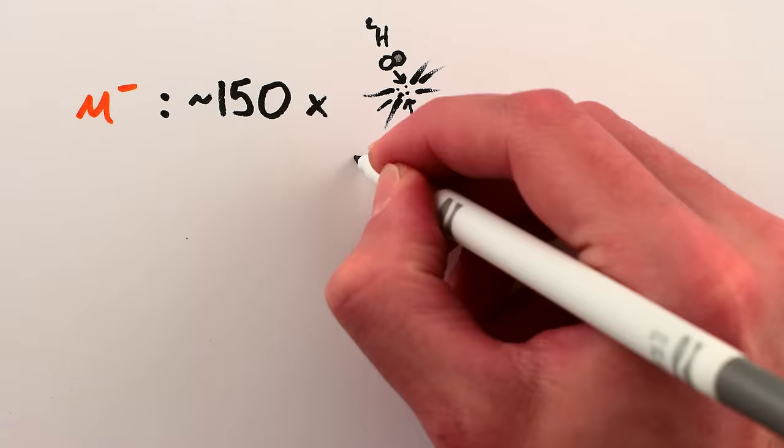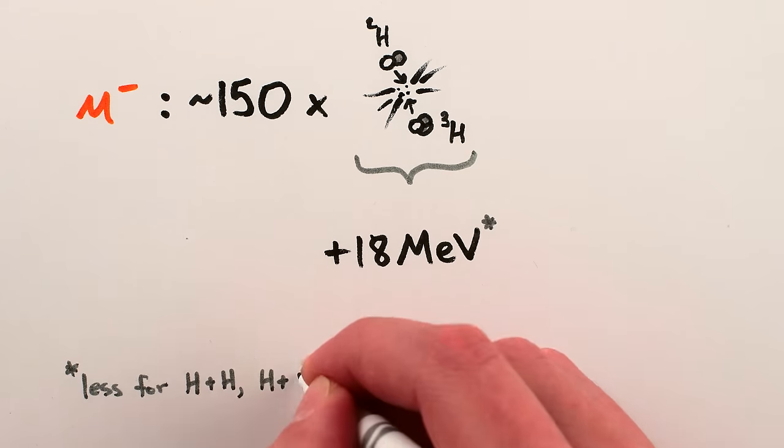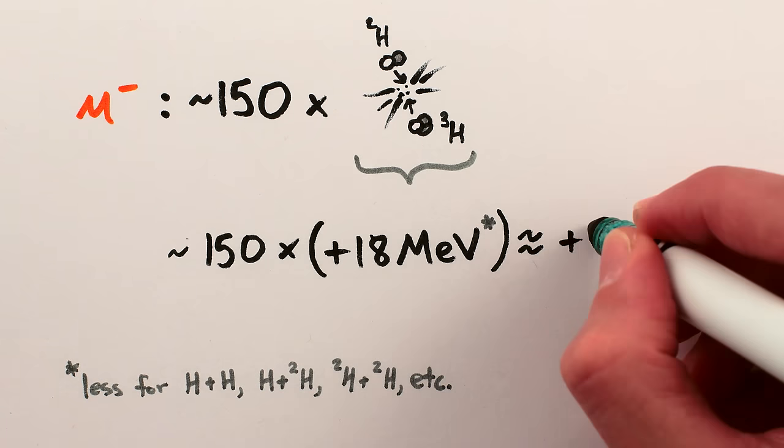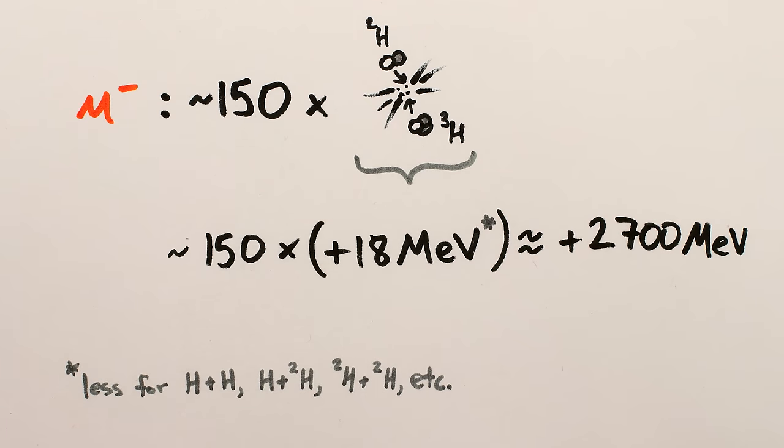This means that each muon only helps an average of 150 fusions of nuclei before it gets stuck. And since each fusion of nuclei releases about 18 mega electron volts of energy, this means that after 150 fusions, each muon will have facilitated an average of 2700 mega electron volts, or 2.7 giga electron volts, of energy generation.